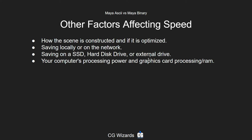If you save to an external drive, thumb drive, or flash drive, those will definitely be slower to save and open files. In that case, it might be quicker to copy the file to your local machine from the external drive and then open it locally.